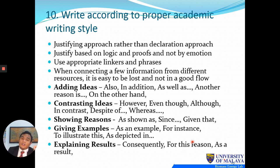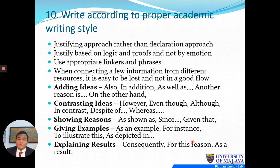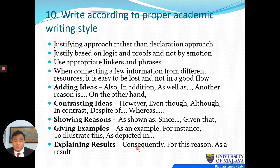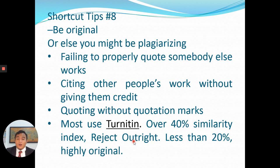You must write according to proper academic writing style — use a justifying approach rather than a declaration approach. You cannot just say 'my project is good because it's good'; you must justify based on logic and proof, not emotion. Use appropriate linkers and phrases: to add ideas use 'also', 'in addition', 'as well as'; for contrasting arguments use 'in contrast', 'even though', 'although'; for showing reason use 'as shown'; for giving examples and explaining results use appropriate connectors. Proper linkers ensure a good flow in your writing.